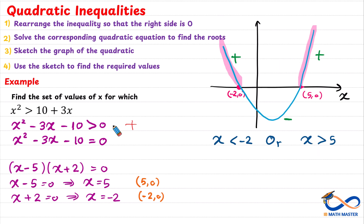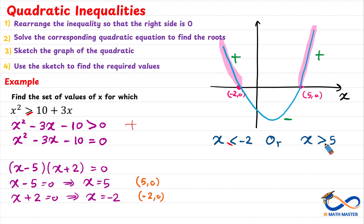Keep in mind that negative 2 itself and 5 itself are not included in the solution — we have strictly less than and greater than. Because in the original question we have only strictly greater than. If we had 'greater than or equal to', then negative 2 and 5 would be part of the solution.